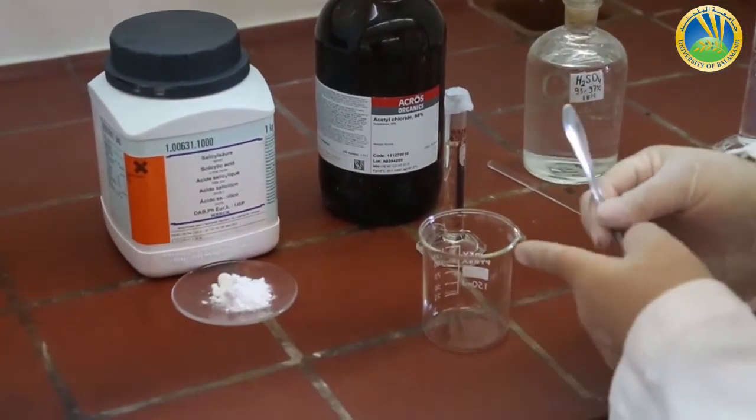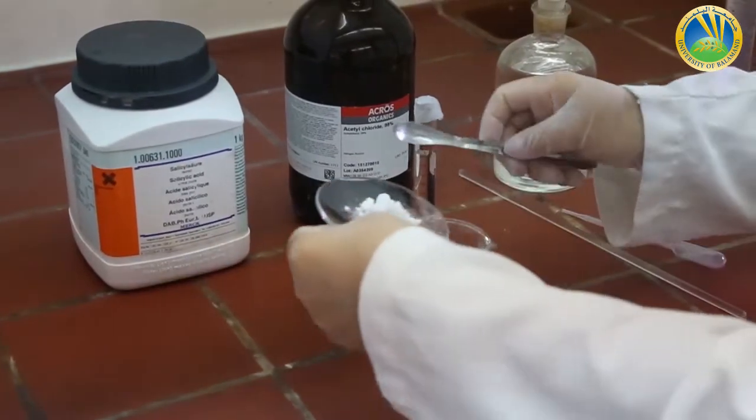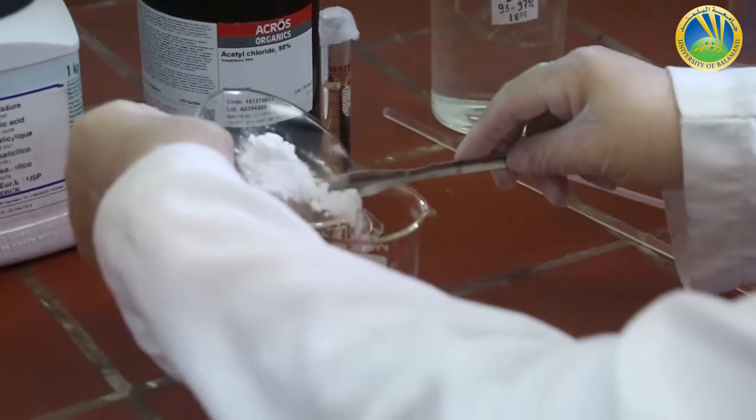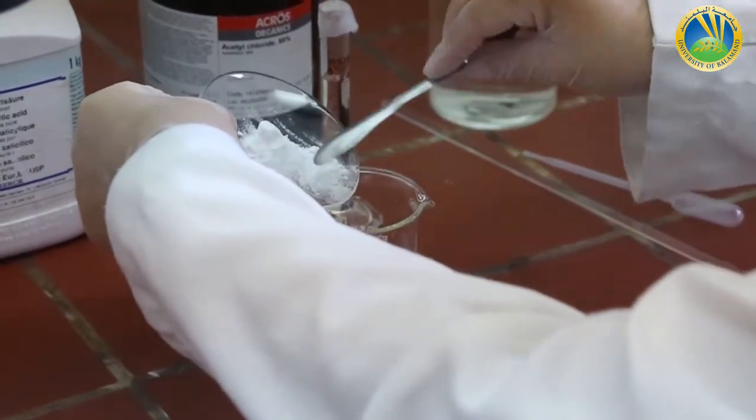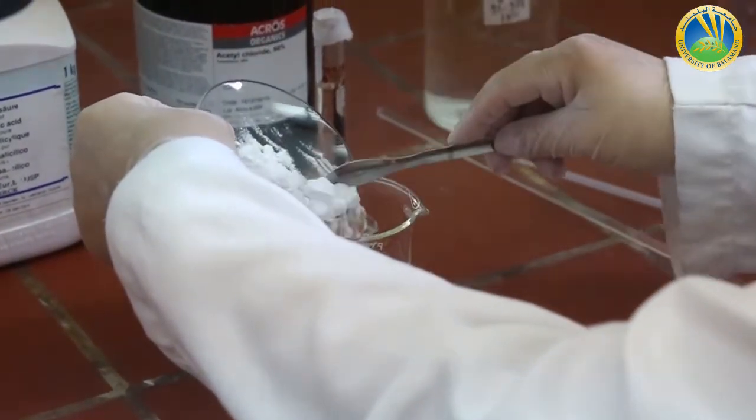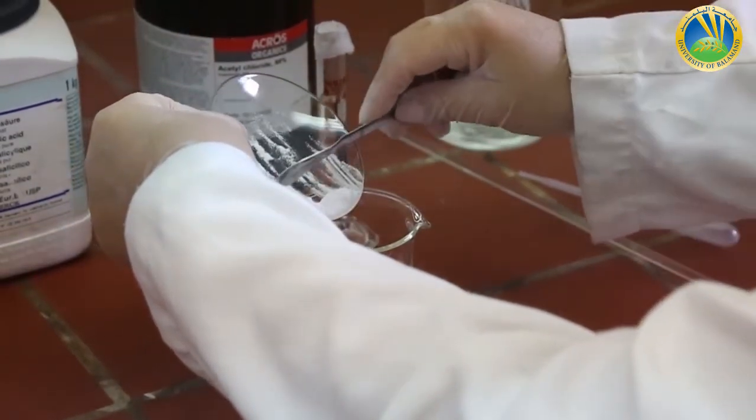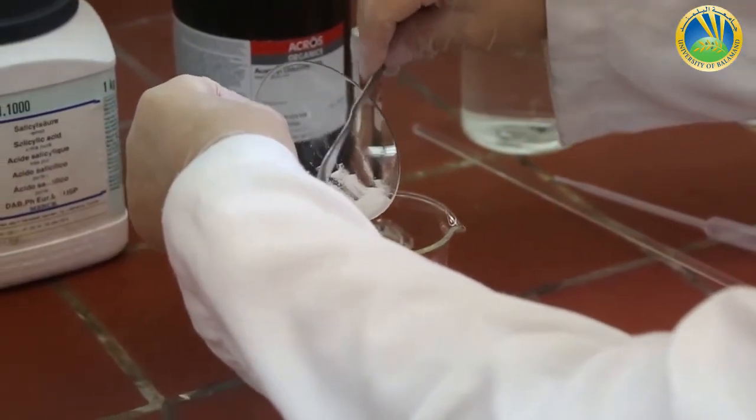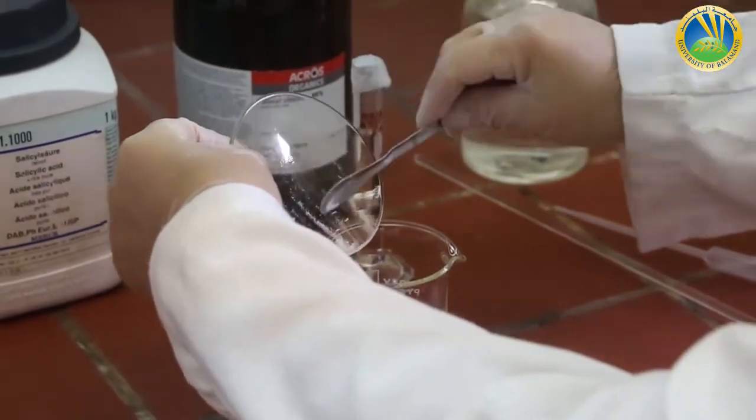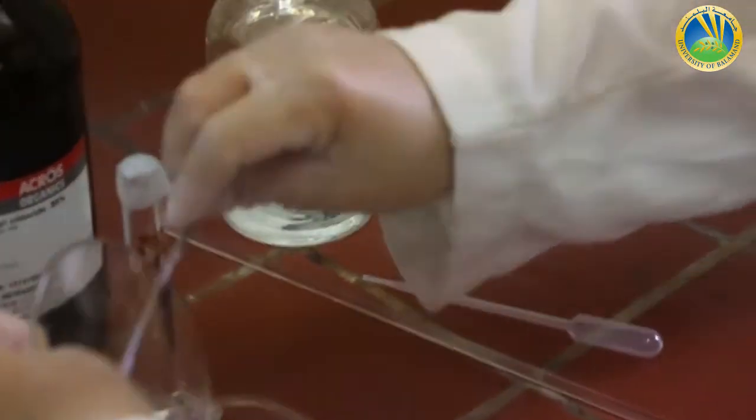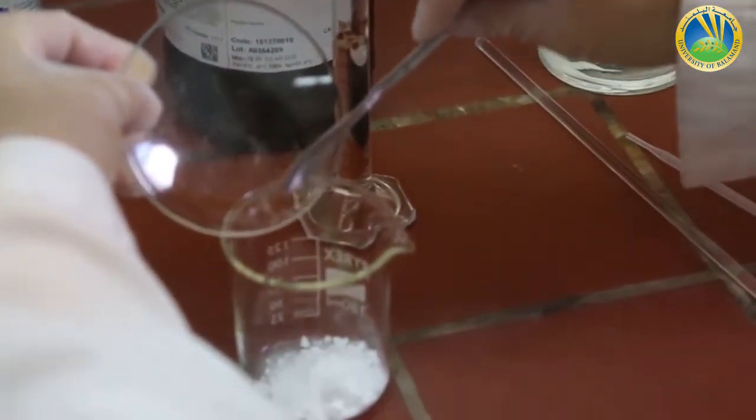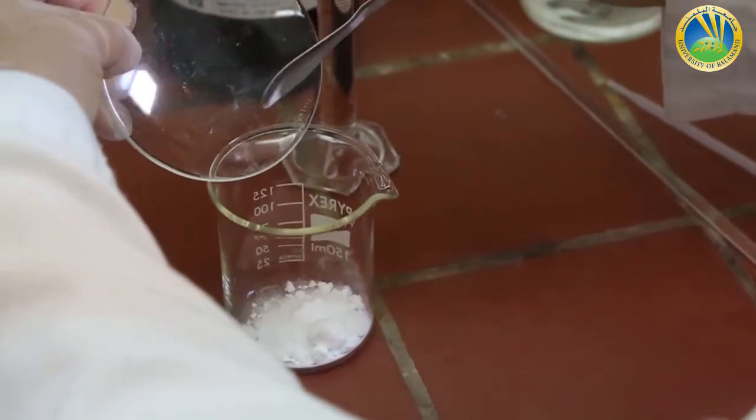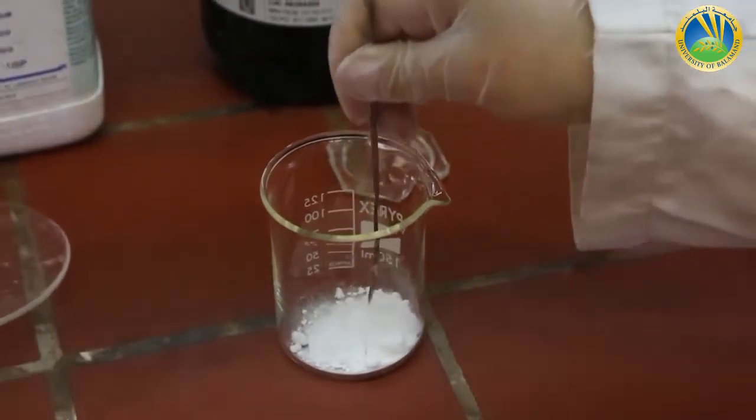I will introduce now in order the salicylic acid, 5 grams, into the beaker. I weighed it before I started.